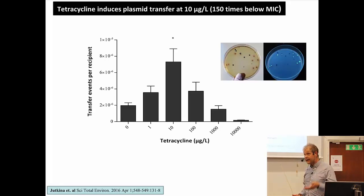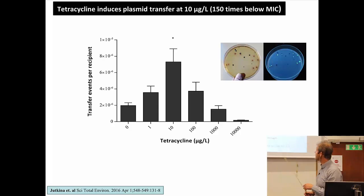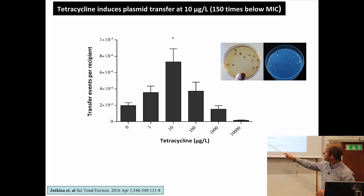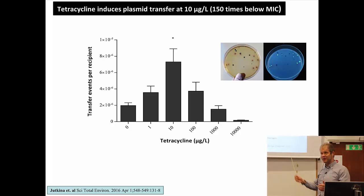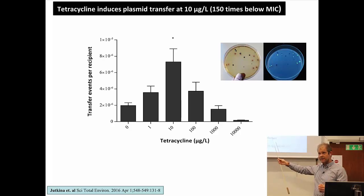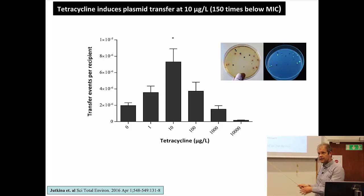Antibiotics can not only select for resistance but also promote the actual transfer of resistance to other bacteria. We showed in one paper that 10 micrograms per liter increases the number of transfer events of a resistance plasmid from one bacterium to another. Personally, I think selection is more important, because transfer to some degree always happens. You can accelerate it with stress — antibiotics being one type of stress. But for resistance to really evolve and establish, you also need a selection pressure that favors the bacteria that have taken up the resistance plasmid.